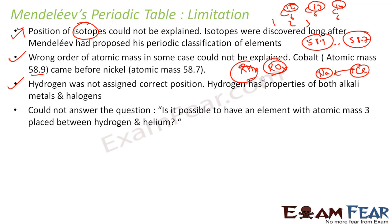Also, he could not answer this question: is it possible to have an element with atomic mass 3 between hydrogen and helium? For the question, for example, hydrogen has atomic mass 1, helium has let's suppose 4, right? So can we have one element with atomic number 3 here?